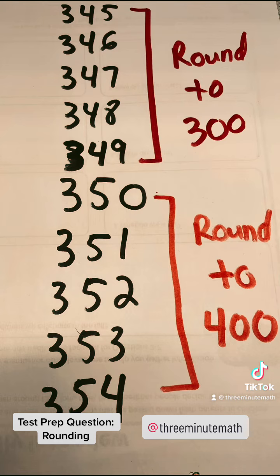Any numbers 49 or less will round down. So 349, 348, 347, 346, and 345 will all round down to 300.